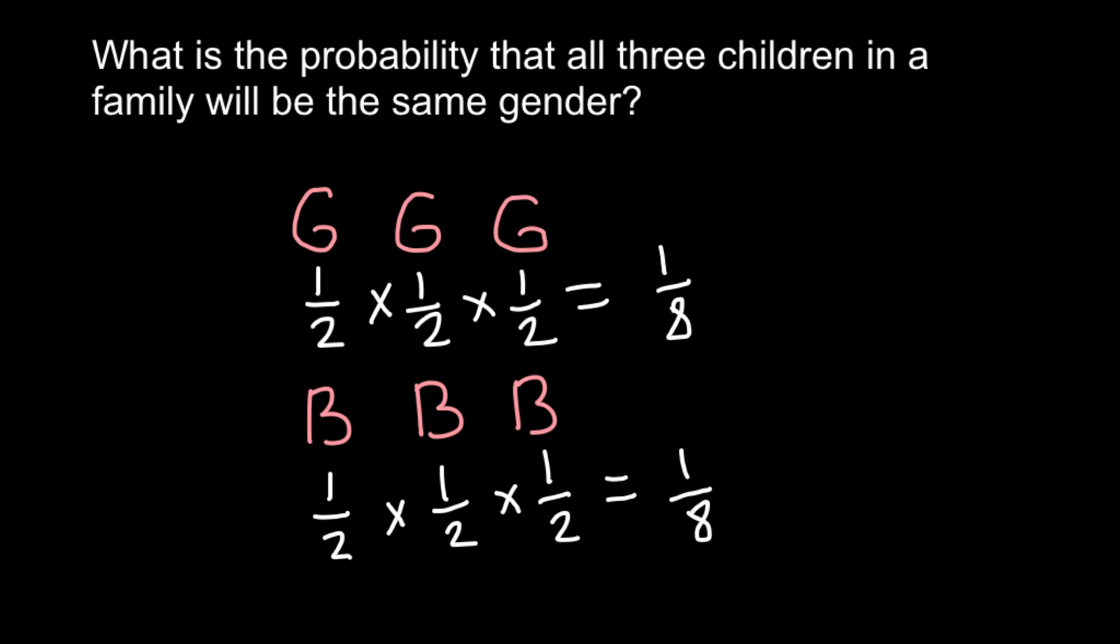So the probability that a family would have all three girls is the same as the probability that this family would have all three boys. And when we have two mutually exclusive probabilities, we have to add them. This is the sum rule. Because this family that has three children cannot have simultaneously three girls and three boys.